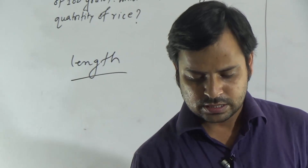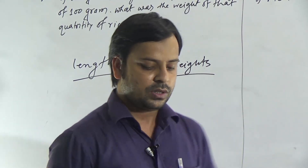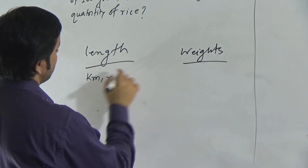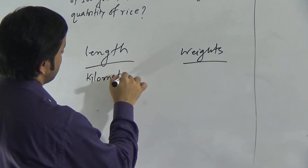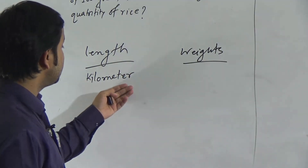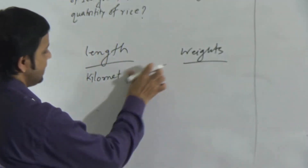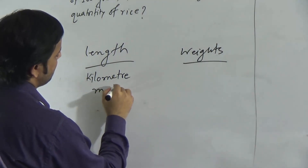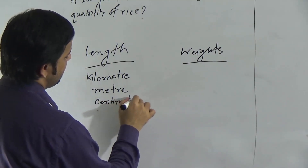In case of measurement of length, we know some units. The units are: kilometer, meter — meter spelling is M-E-T-E-R or M-E-T-R-E, both are correct; in your book it is written M-E-T-R-E — kilometer, meter, centimeter, and millimeter.